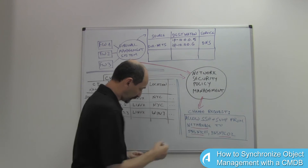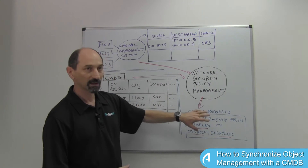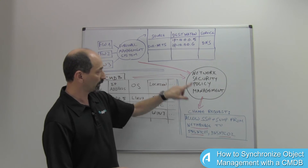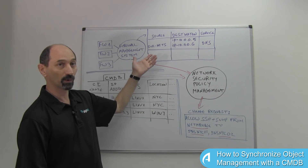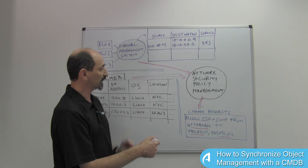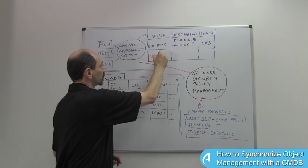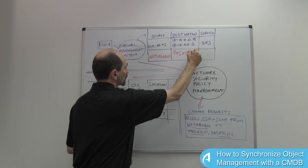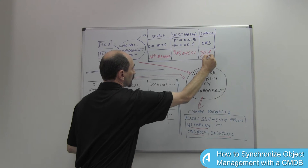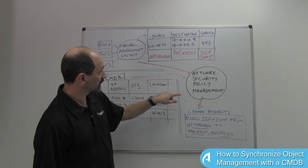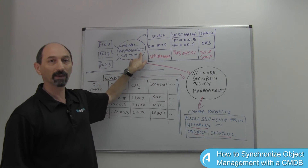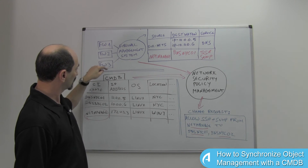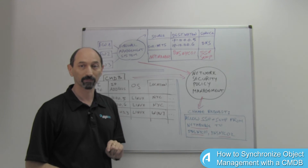That system could then influence change request processing so that the names in the change request automatically get populated with the proper definitions. With all of this in place, you'd end up with a firewall rule using understandable names — for example, from NetManage to DNSNYC01 with SSH and SNMP — because those names would now be part of the firewall management system, created with matching definitions so that what's in the CMDB and in the firewalls is the same. Thank you for your attention.